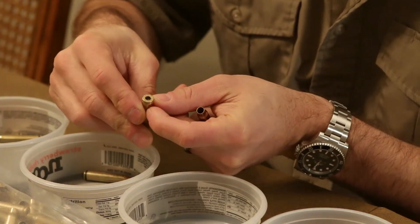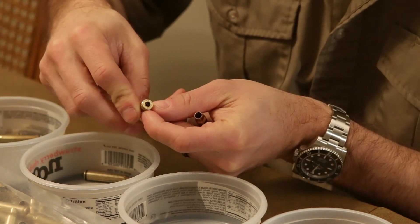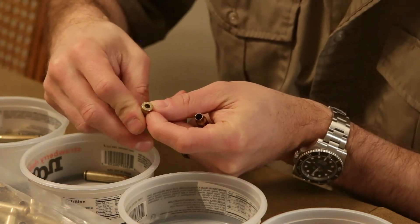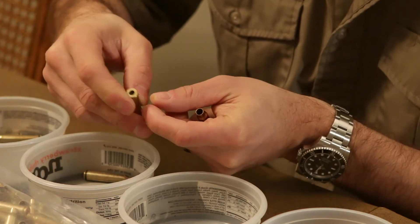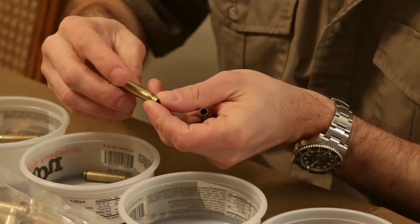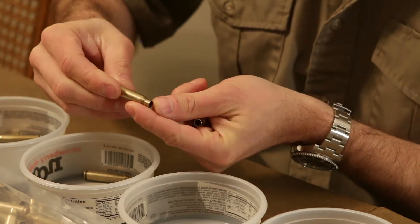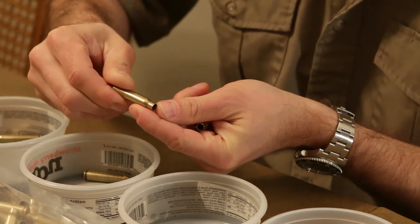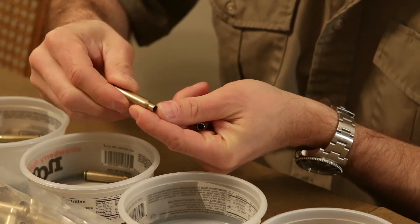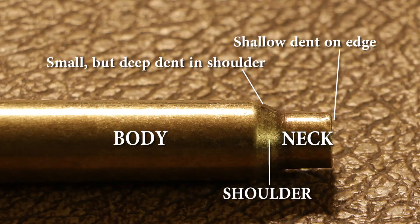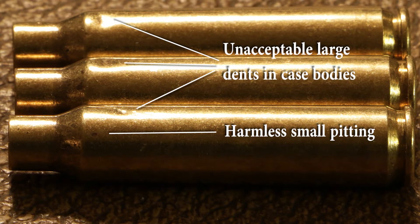So the best way to inspect each case is we'll take a look at the head stamp. This is a Lake City 2012. And then flip it over and slowly turn it in your hands while keeping one of your fingers along the edge of the case mouth. That'll allow that finger to feel any damage to the edge, especially if there's any cracks starting to form. And with your eyes, you can check the body, the shoulder, and the neck for any major dents. This one looks good, so we'll put that in with the 2012.